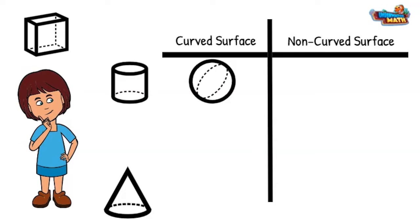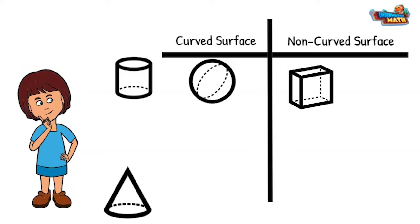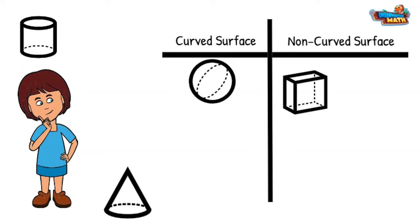Here is a cylinder. It looks like a soup can. If I turn it on its side, it will roll away. This is a curved surface.